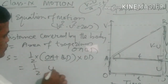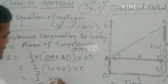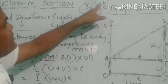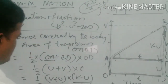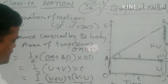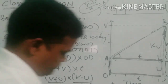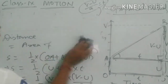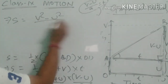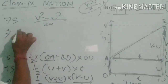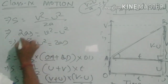So S = ½ × (u + v) × t. We know that t = (v - u) / a, so substituting: S = ½ × (v + u) × (v - u) / a. Using the identity (v + u)(v - u) = v² - u², we get S = (v² - u²) / 2a. By cross multiplying, 2aS = v² - u², that is v² - u² = 2aS. This is the third equation of motion.